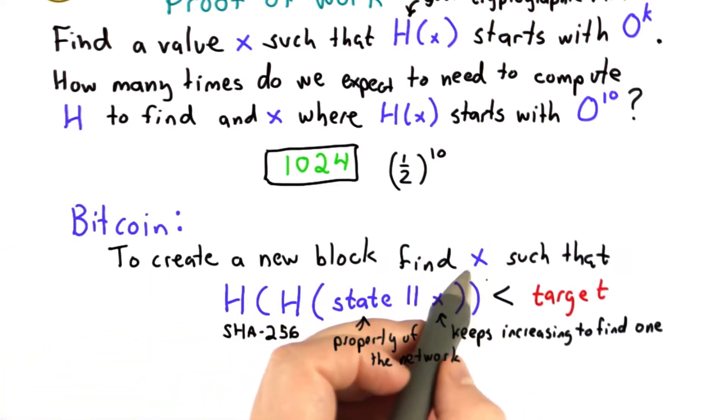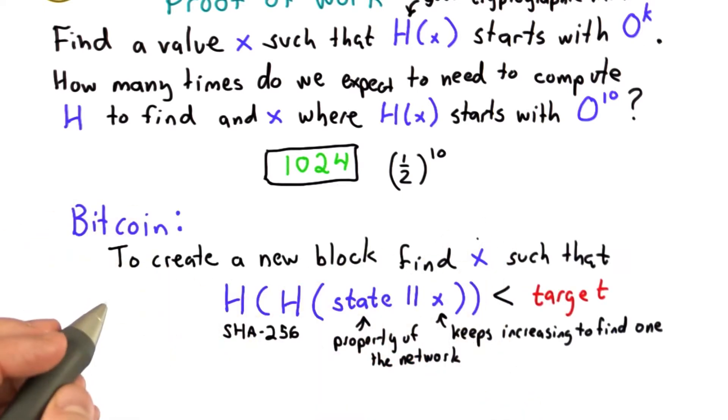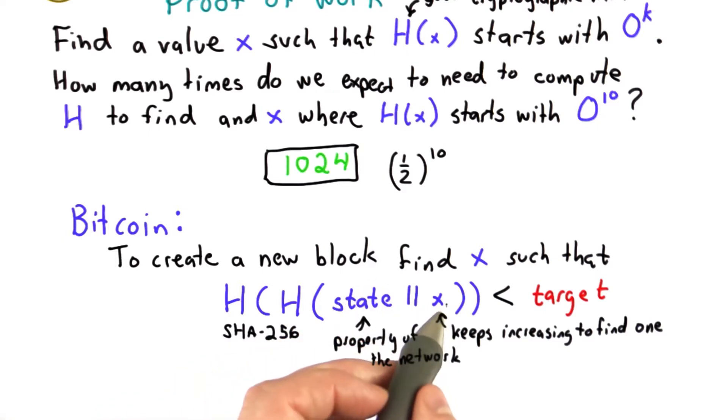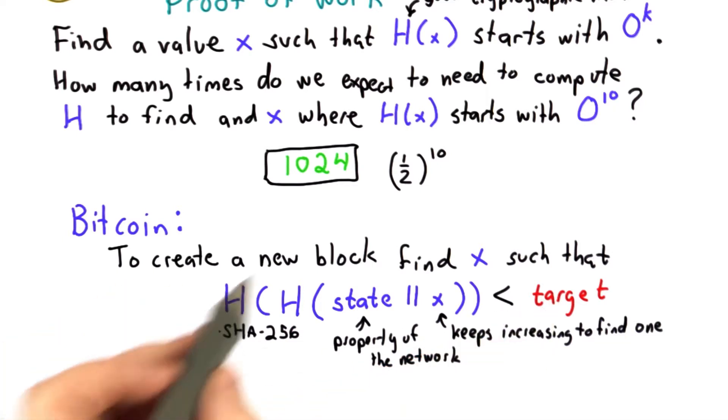In order to create a new block which would validate the next history of transactions, it's necessary to find some value x such that the hash of the hash of the state concatenated with x is less than some target. You keep increasing the value of x until you find one that satisfies that property. That provides the timestamp that allows a new block to be generated.